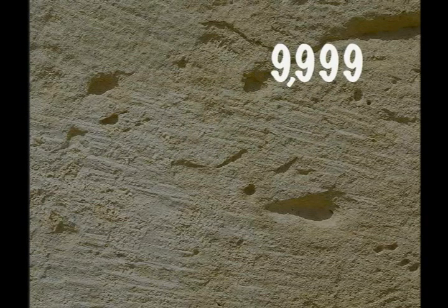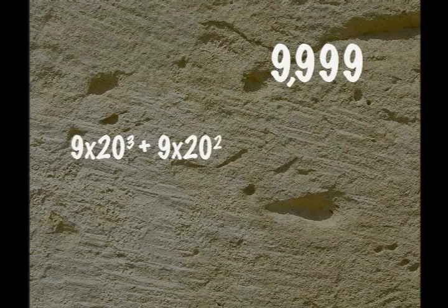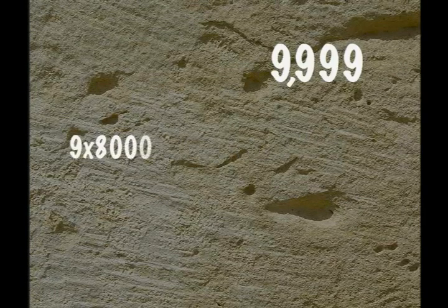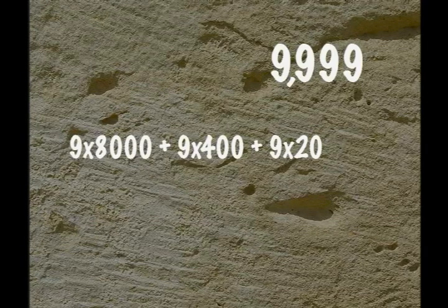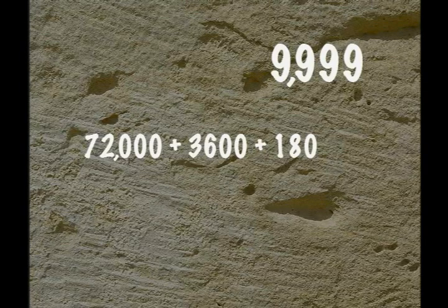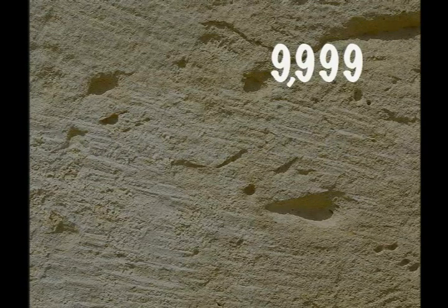In a base 20 system, every number is written as a power of 20. So starting with the base 20 number 9999, we would write it in expanded notation using powers of 20: 9 times 20 to the third plus 9 times 20 to the second plus 9 times 20 to the first plus 9 times 20 to the zero. Simplified, this becomes 9 times 8000 plus 9 times 400 plus 9 times 20 plus 9, which equals 72,000 plus 3,600 plus 180 plus 9, or 75,789.